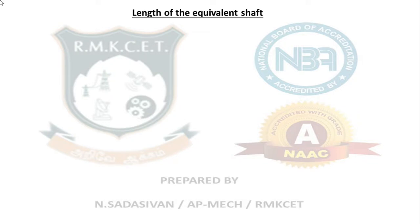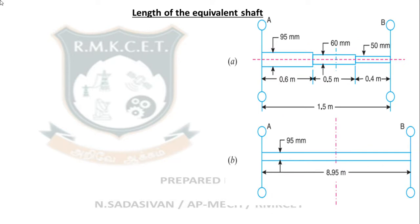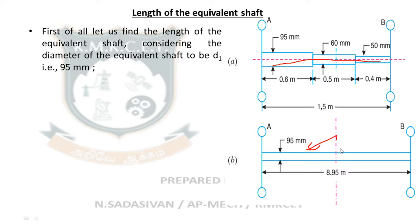The first step is to convert this shaft into an equivalent shaft. We are going to change this configuration so that our calculation is simpler. We will find the length of the equivalent shaft, considering the diameter of the equivalent shaft to be D1 = 95 mm — the first diameter in the given configuration.